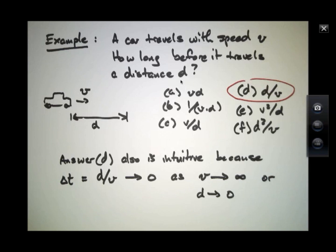And if v gets larger and larger in this expression, then 1 over v gets smaller. And this time interval goes to 0 as this velocity, v, goes to infinity.